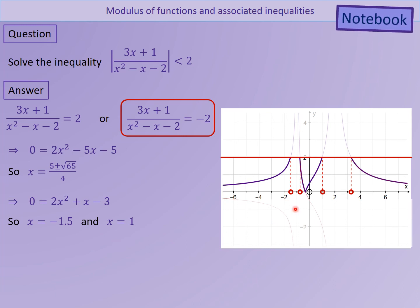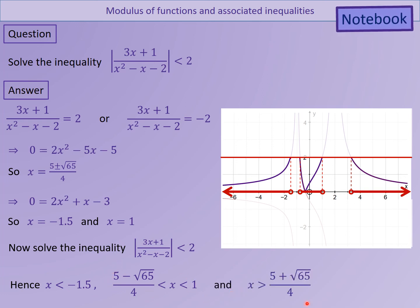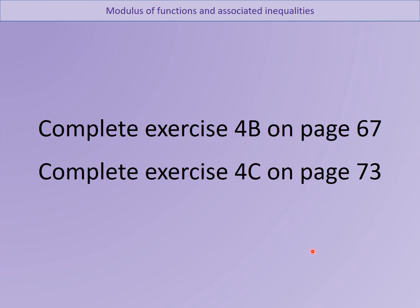Now I'm in a position to work out those inequalities - it was less than that, between those, and greater than that one. So the solutions are: anything less than minus 1.5, anything between those two numbers, and finally anything greater than that number. So we've gone through how to find solutions, how to solve equations, and how to solve inequalities using the modulus function. I'd like you to have a go at completing exercise 4B and 4C on those two pages, just to practice your sketching skills and solving equations using the mod function.